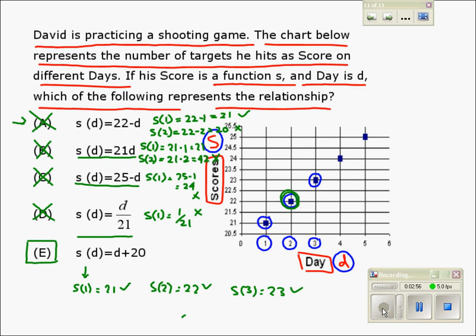When D equals 4, S becomes 24. That's right. And finally, when D equals 5, S becomes 25. Once again, correct. We'll stick with E as the best option. Thank you.